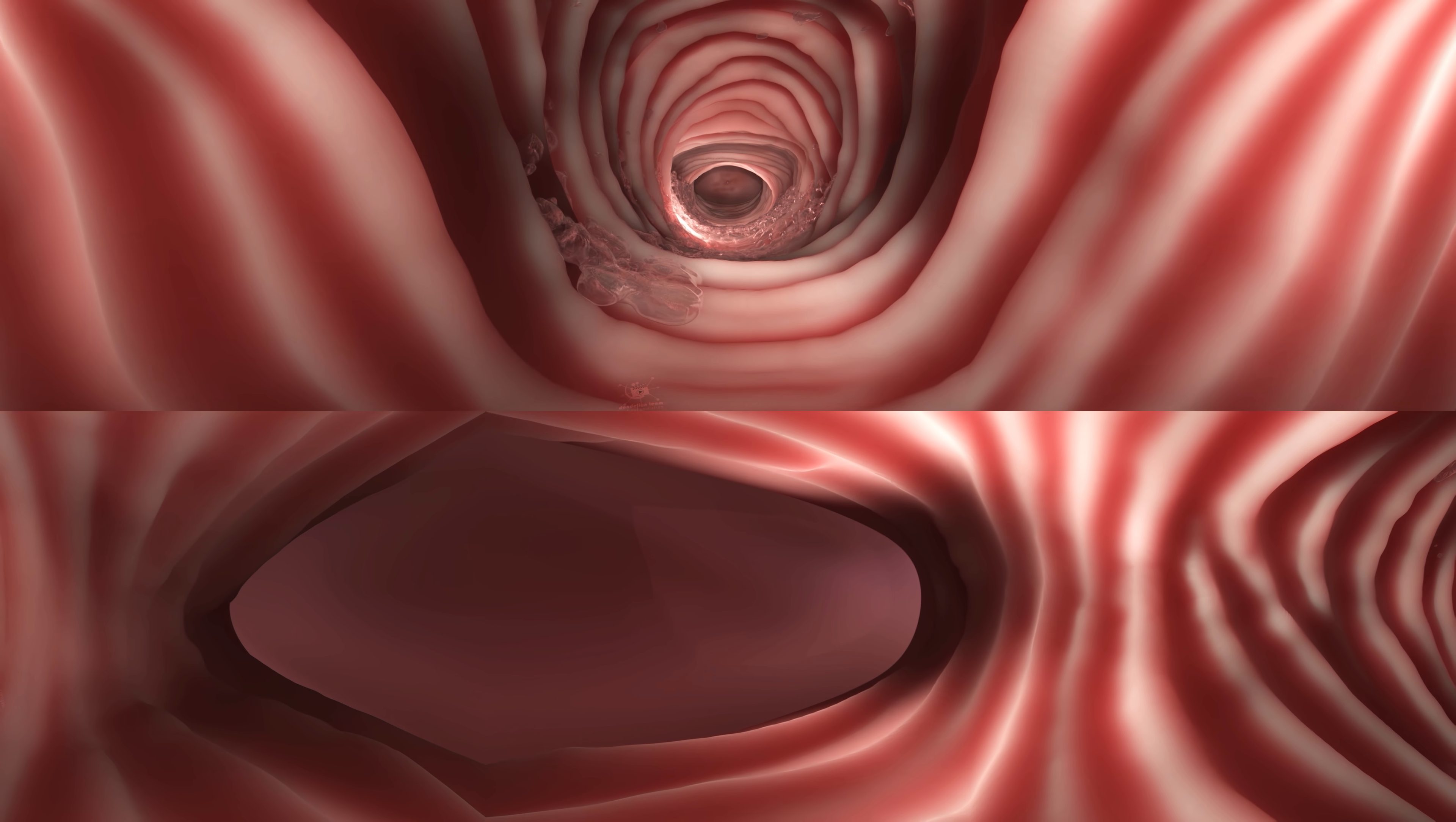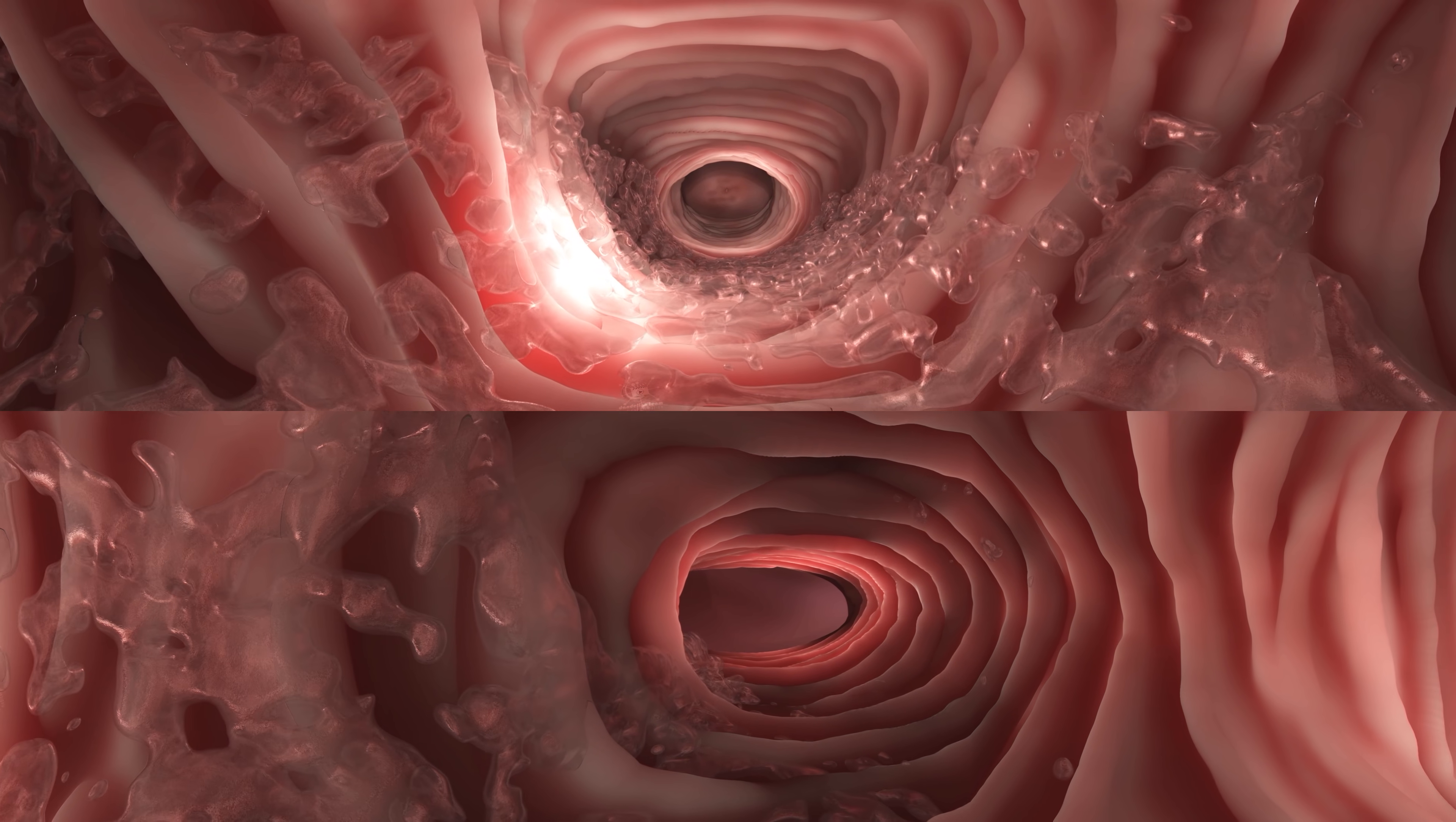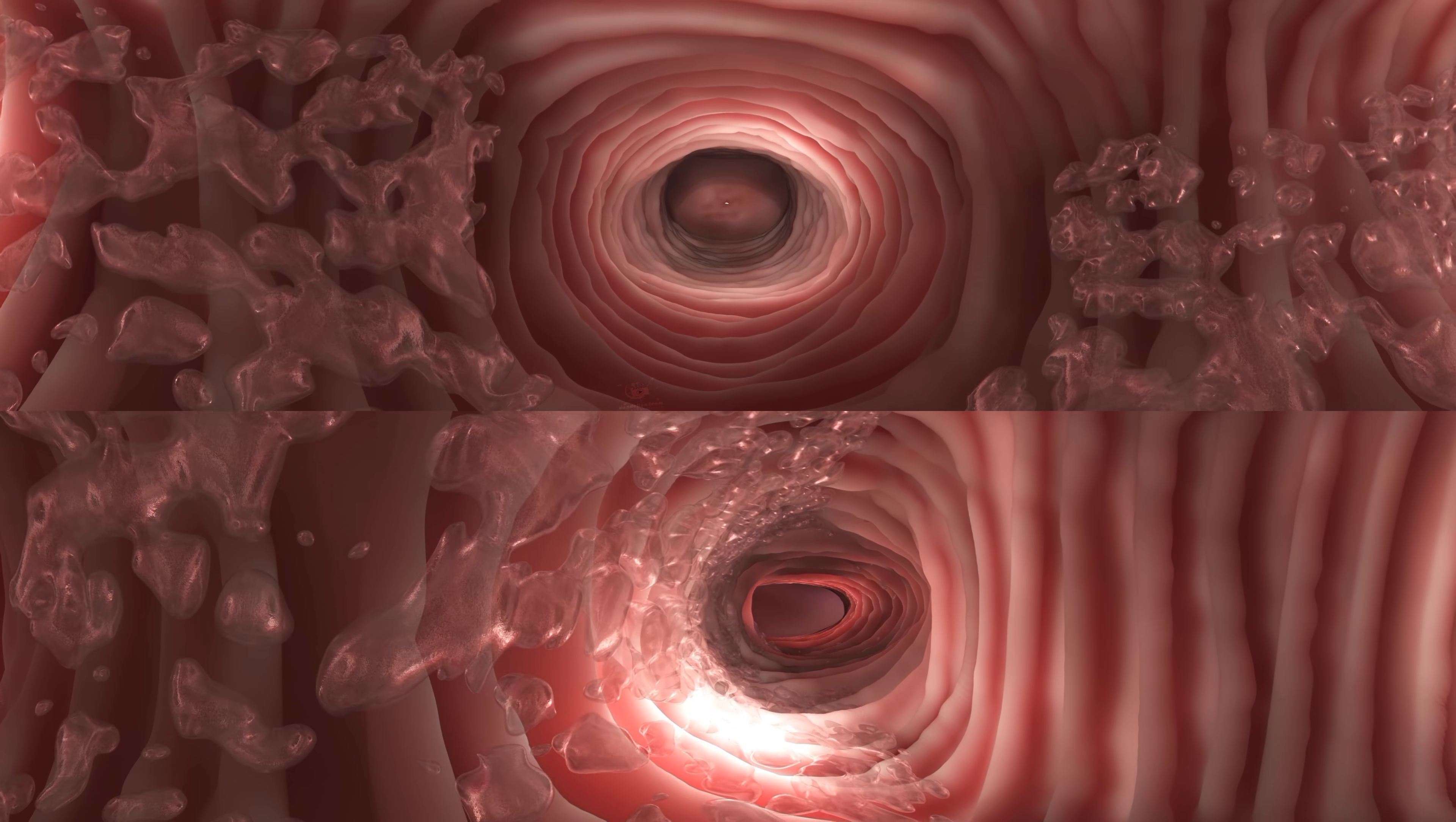The vaginal walls do indeed have folds, and these folds contribute to the unique anatomy and function of the vagina. The folds of tissue help to trap moisture and create a lubricating surface, which can facilitate sexual intercourse and help to protect the vaginal lining from irritation.